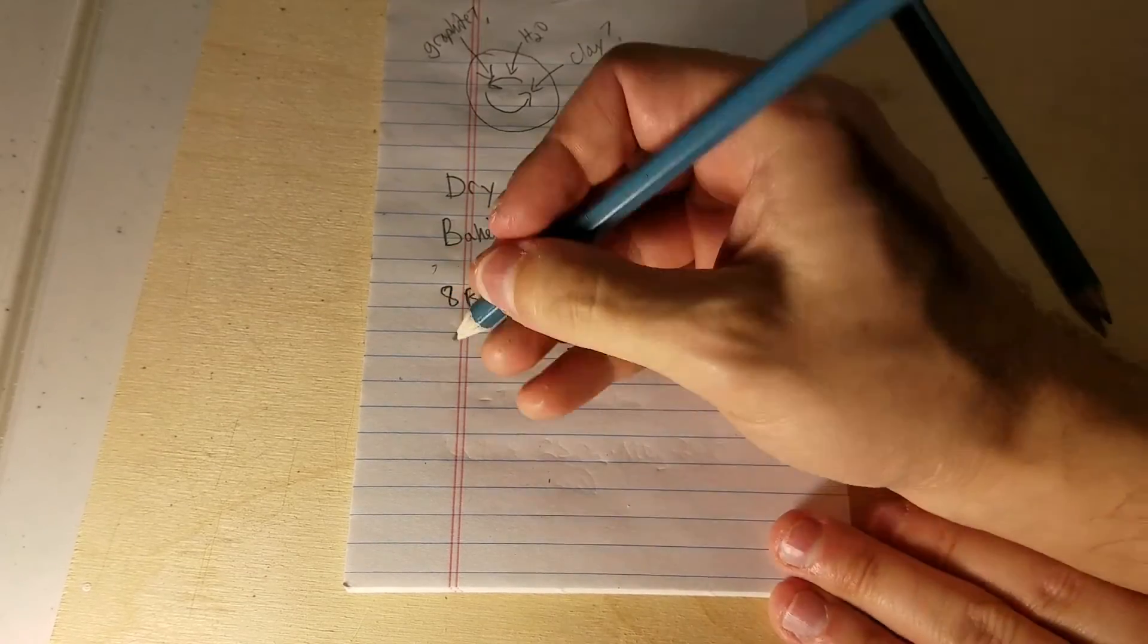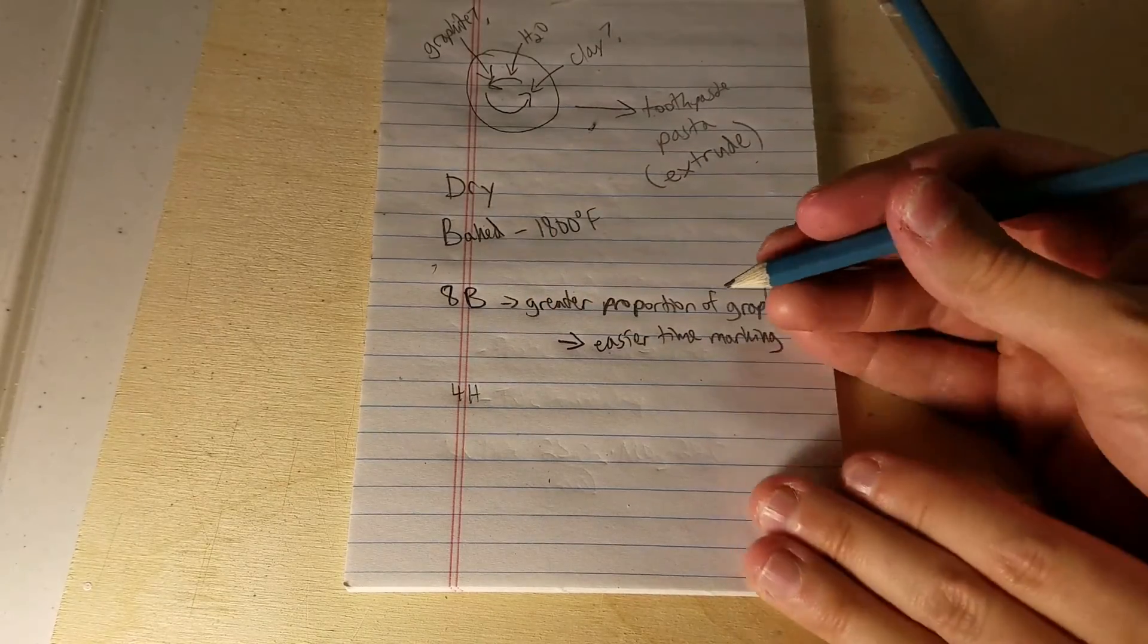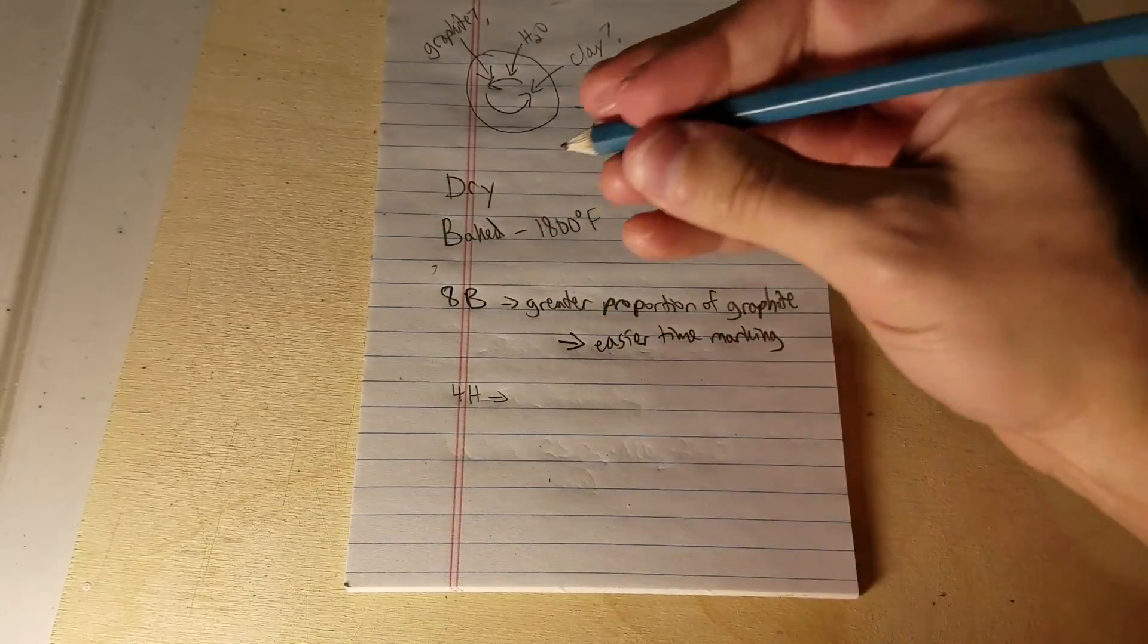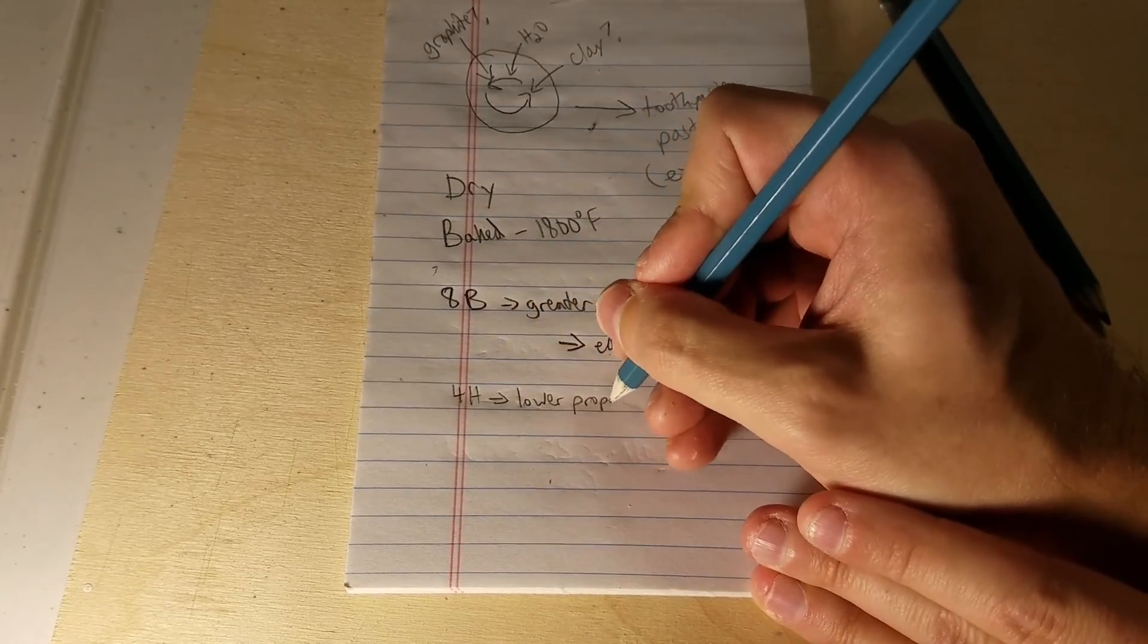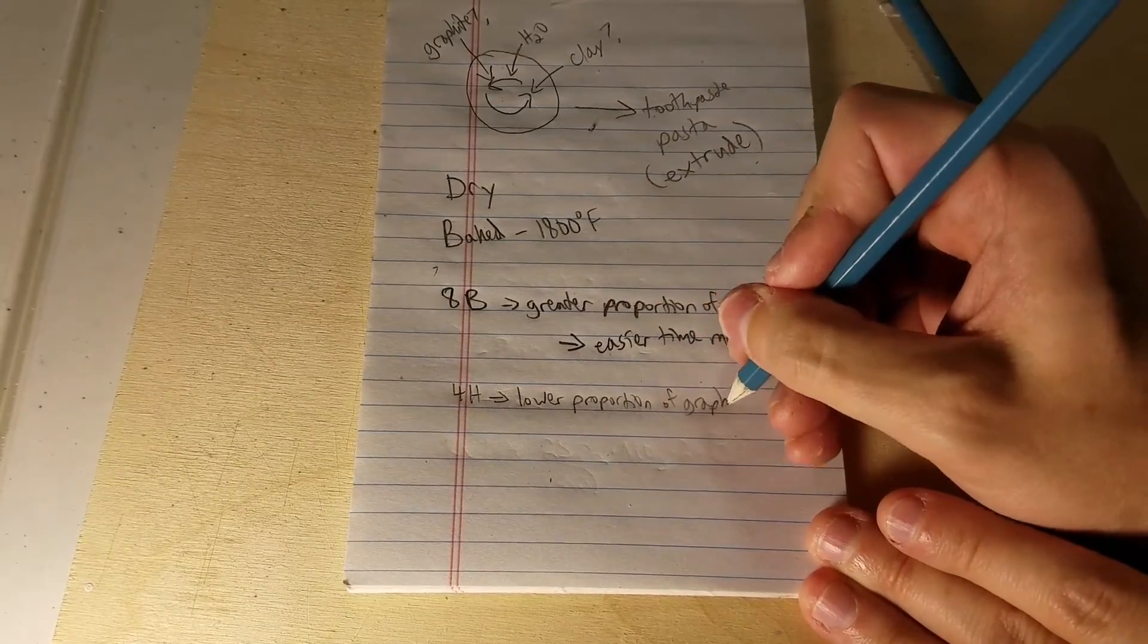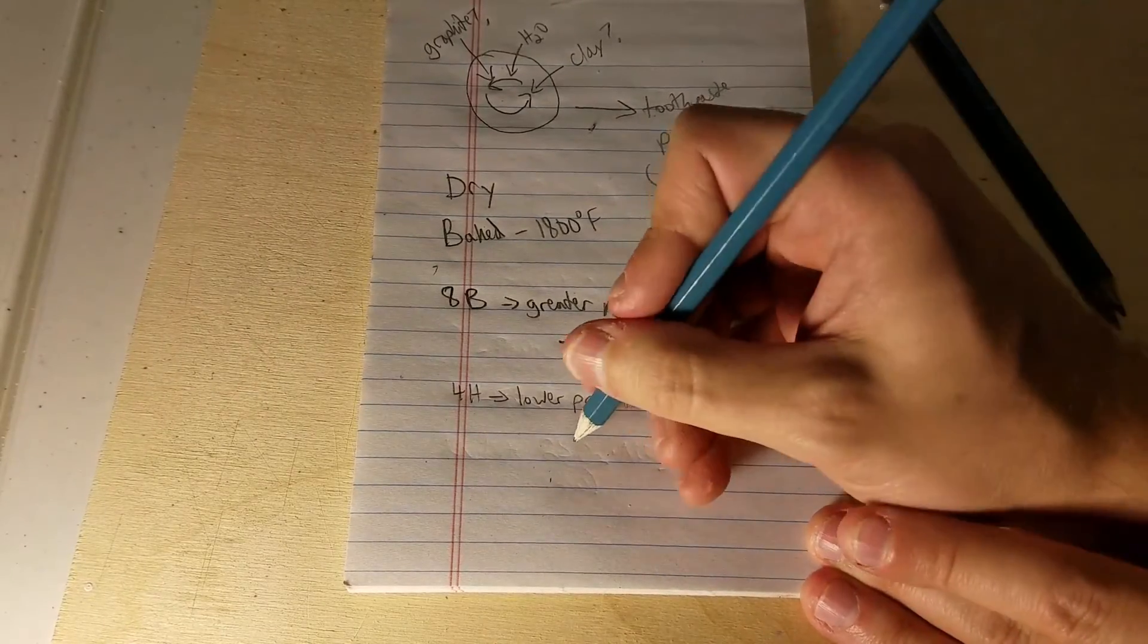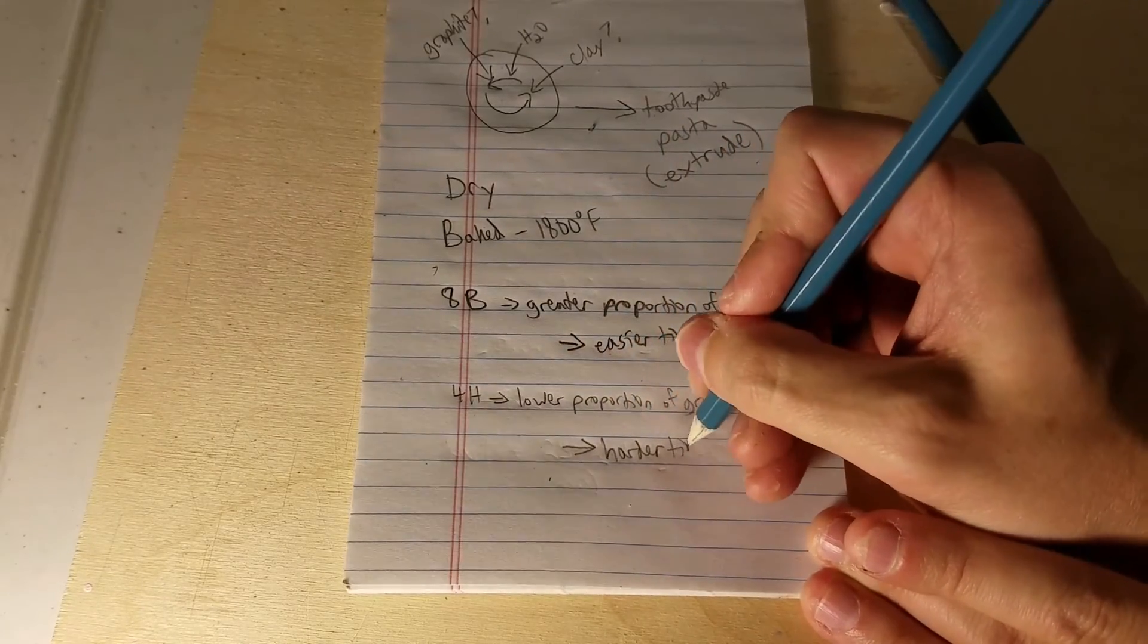If we compare that to a 4H pencil, and you can already sort of see the difference here on the video, there is a lower proportion of graphite. In other words, a greater proportion of clay. And so you have a harder time marking, but sometimes that's what you want.